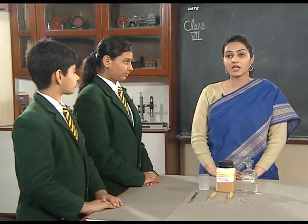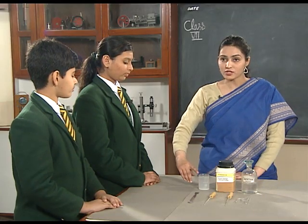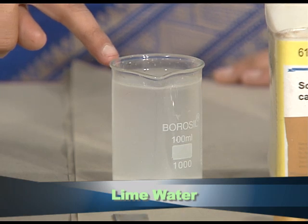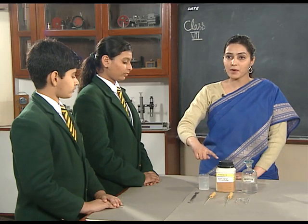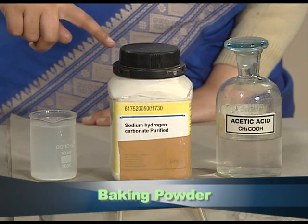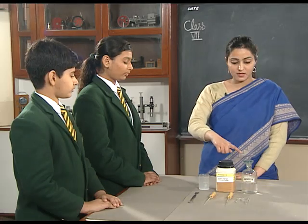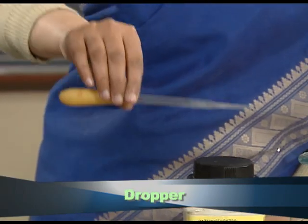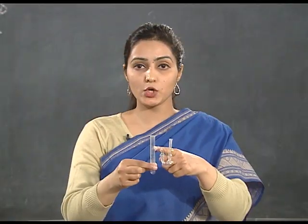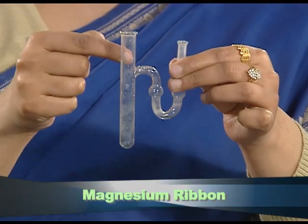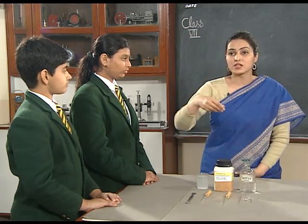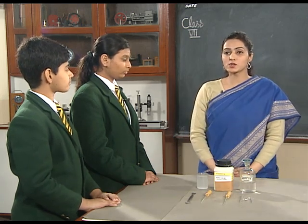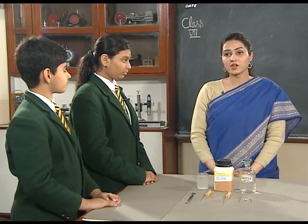Now we are going to do another activity of a chemical change. In this activity we need lime water, which is calcium hydroxide; baking powder, which is sodium hydrogen carbonate; vinegar, which is acetic acid; a spatula, dropper, and a test tube fitted with a U-shaped delivery tube. Instead of this, we can also use two separate test tubes and a delivery tube fitted with cocks.